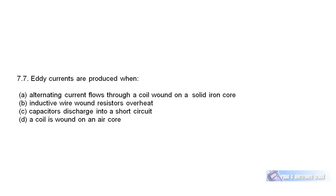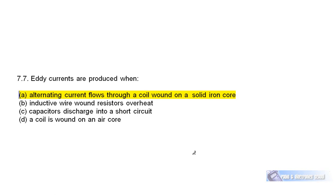Question 7.7: Eddy currents are produced when alternating current flows through a coil wound on solid iron. They're produced in the core material by the expanding and contracting magnetic fields around both the primary and the secondary. Eddy currents also flow in laminated iron but they're far less — laminated iron cores are far more efficient in terms of eddy current loss than solid iron cores.